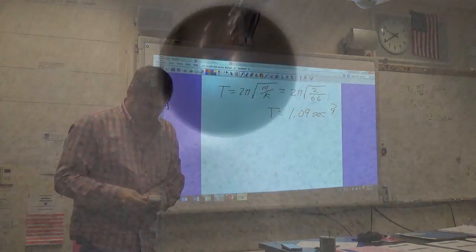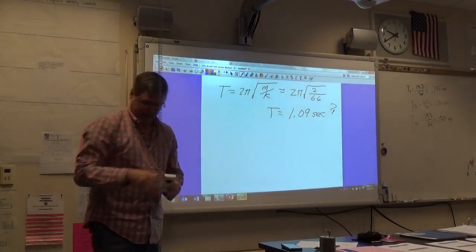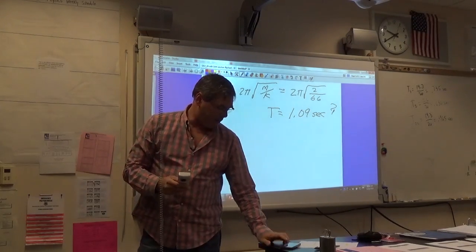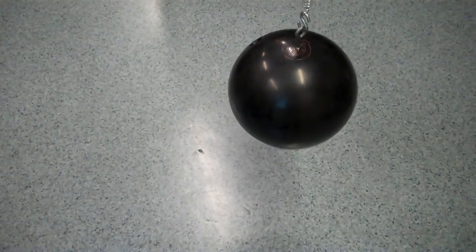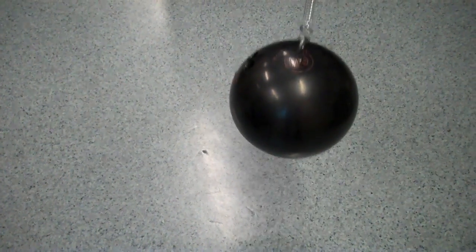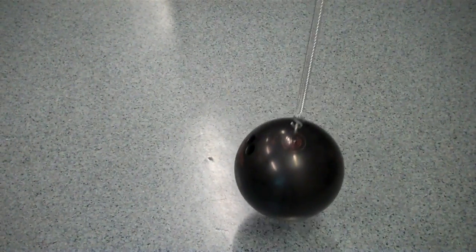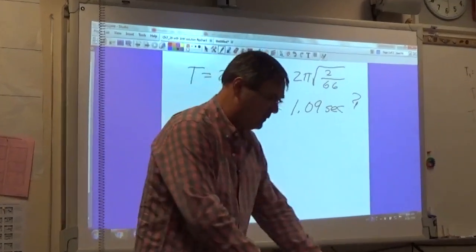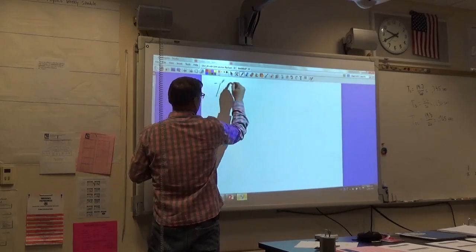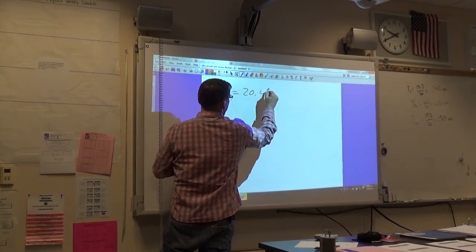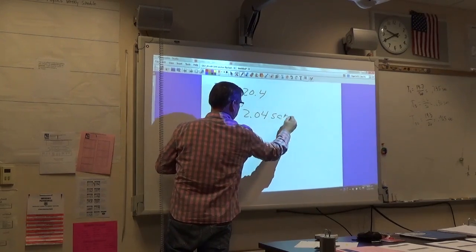So when I set this bowling ball into oscillation, there we go. It's going. And I'm going to start it. Go. One, two, three, four, five, six, seven, eight, nine, ten. There we go. 20.4. So t10 equals 20.4. So t then is 2.04 seconds.